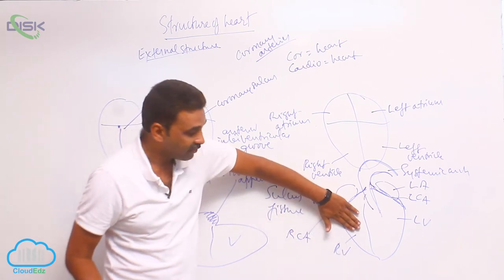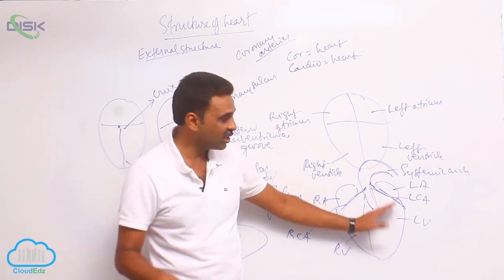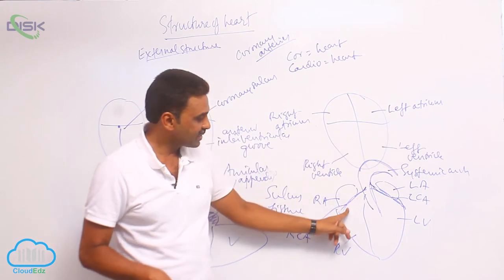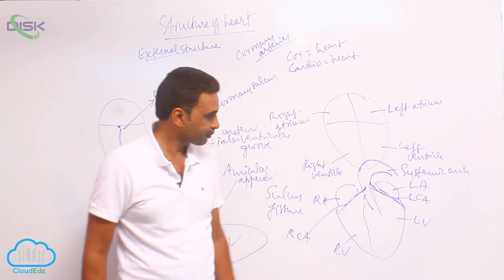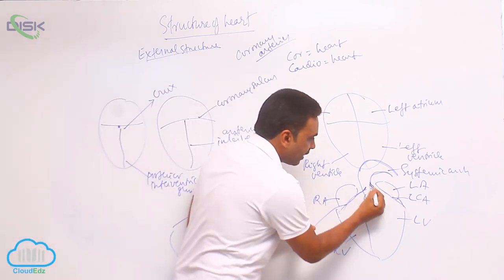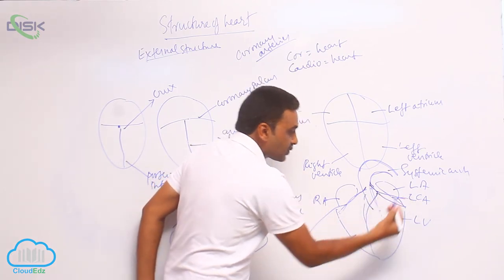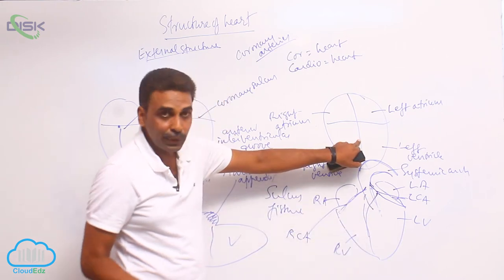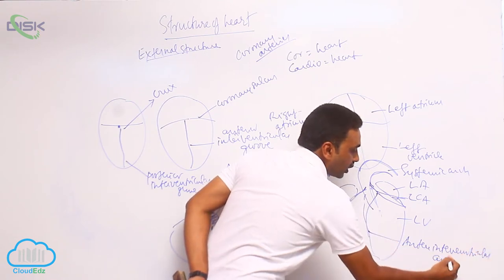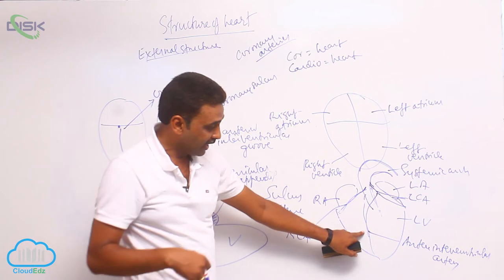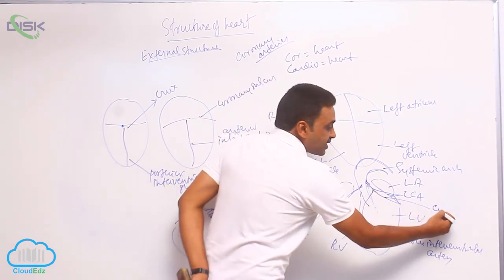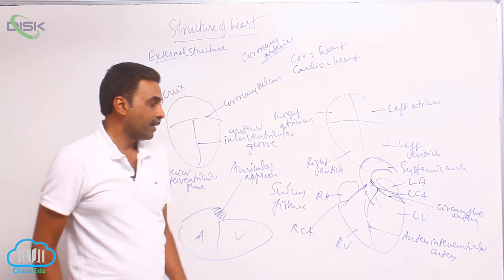The left coronary artery divides into two branches. One branch enters the anterior interventricular groove and is called the anterior interventricular artery. The other branch, which goes to the left, is called the circumflex artery. The circumflex artery travels through the coronary sulcus and goes posteriorly around the heart.